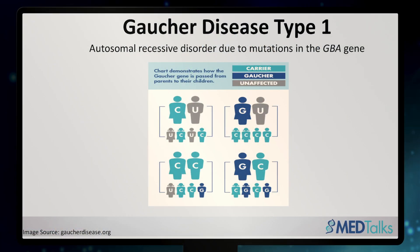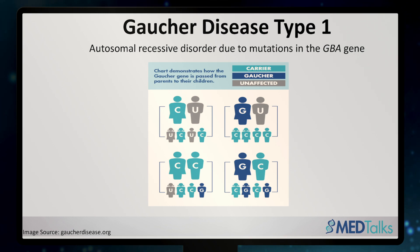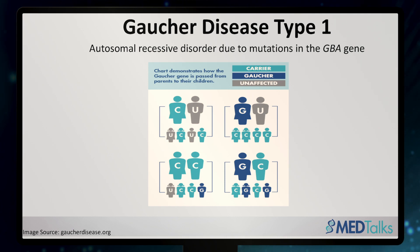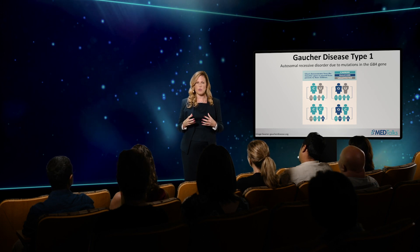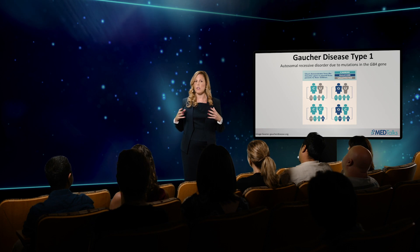Gaucher disease is an autosomal recessive genetic disorder that leads to the deficiency of a specific enzyme called glucocerebrosidase. Glucocerebrosidase is an important protein that helps break down a specific lipid molecule called glucosylceramide into its components of glucose and ceramide. When you're deficient in this protein, it leads to accumulation of this specific lipid, which starts to fill up the cell and cause dysfunction. The specific cell affected in Gaucher disease is the macrophage, and when it becomes filled up with that storage, it starts to transform into the Gaucher cell.